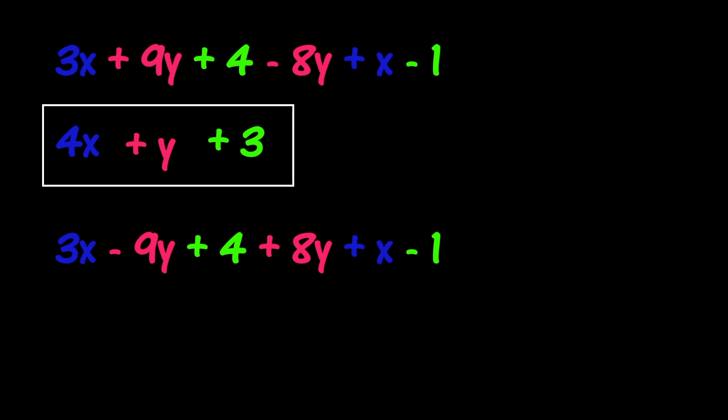As the x terms are the same, we still have 3x plus x, which will give us 4x. For the y terms, we now have minus 9y and a positive 8y. You may notice that this does not add up to a positive number. Minus 9y plus 8y equals negative 1y.